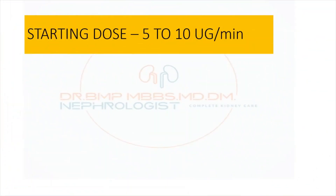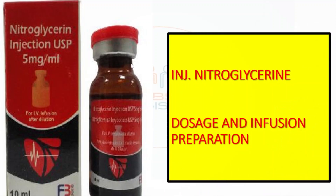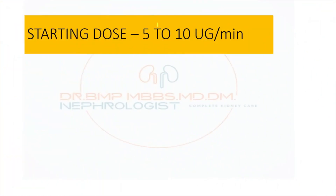Injection nitroglycerin is commercially available in the form of 5 ml or 10 ml injections. A 5 ml vial usually contains 5 mg, so a 5 ml vial contains approximately 25 mg. This is the standard dosage form commonly available.